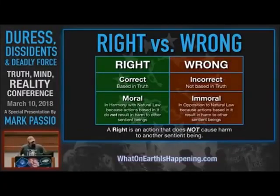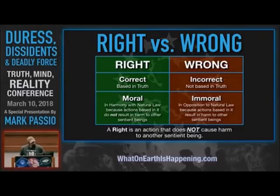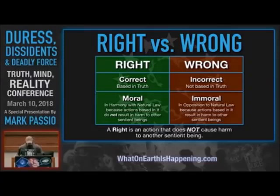What natural law is all about is the objective difference between right behavior and wrong behavior. We use the same word to communicate the idea of correct and moral — we use the word 'right' to communicate those concepts. Correct means based in truth, and moral means that it is in harmony with natural law principles. Because when you take a right action, the result of that action does not result in harm to other sentient beings.